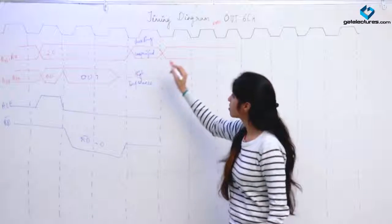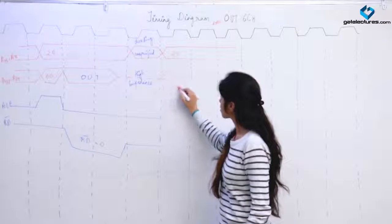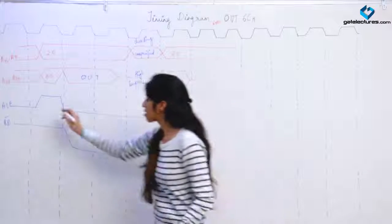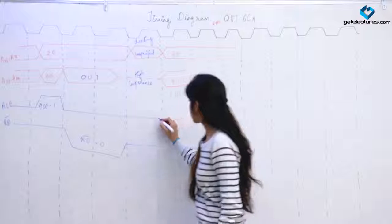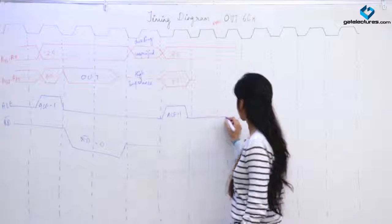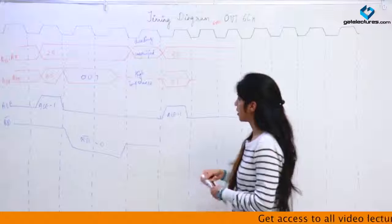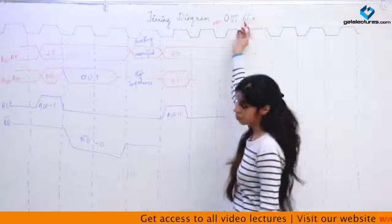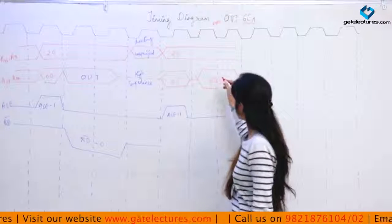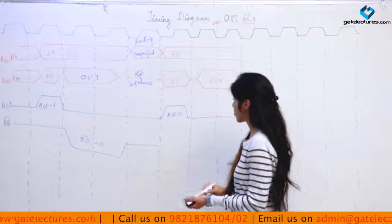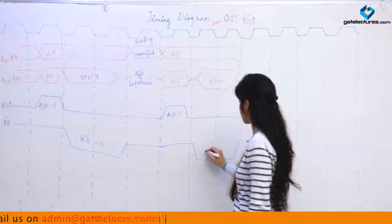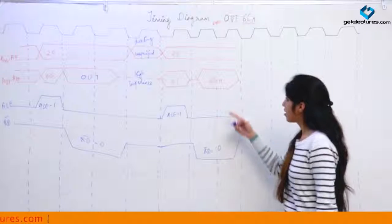The PC gets incremented and address 2001 gets loaded on the address bus. For this, ALE is equal to 1 so this acts as an address bus. Now what is going to come in the data bus? At address 2001 the value 6C was stored, so 6C is loaded in the data bus. To read this data from memory, read-bar is an active-low signal so I am making it 0.